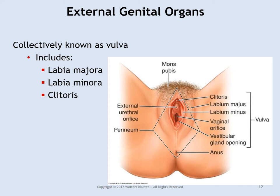The external genitalia collectively are known as the vulva. This includes the labia — folds of skin that protect both the vaginal opening and the urethra — and clitoral tissue, which is erectile tissue that develops from the same tissue as the penis in males. The area between the vaginal opening and the anus is called the perineum. This is where an episiotomy is performed if you need to enlarge the vaginal opening for delivery. An episiotomy should always be performed to the left or right side — never down toward the rectum or up toward the urethra and bladder.